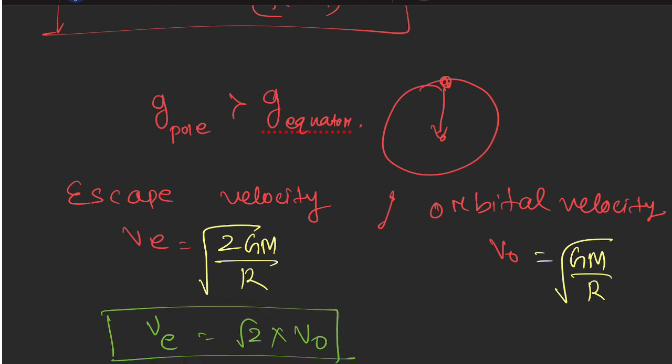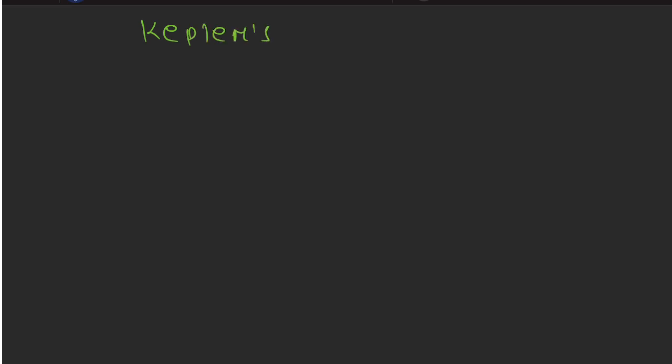So, the conclusion and key point: Kepler's laws, which are very important — there are 3 Kepler's laws. We also have a very important question about the value of capital G and how it was discovered through the Cavendish experiment. We need to learn the history of the Cavendish experiment as one type of revision question.